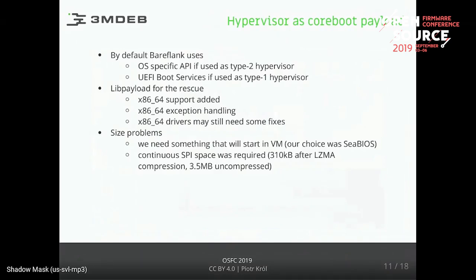Bearflank typically uses OS-specific API when used as Type 2, or UEFI boot services when used as Type 1. But when using coreboot without a UEFI payload, we don't have UEFI boot services, so we had to extend lib payload. We added 64-bit support and 64-bit exception handling, and we didn't focus heavily on device drivers — that may still require some fixes. We also had size problems since we want everything in SPI flash — we don't want to use a disk for loading additional bootloaders, so everything must fit in 8 MB.